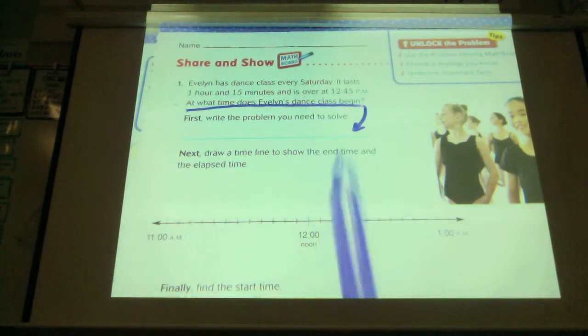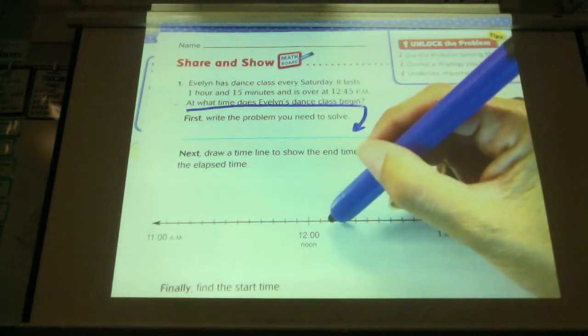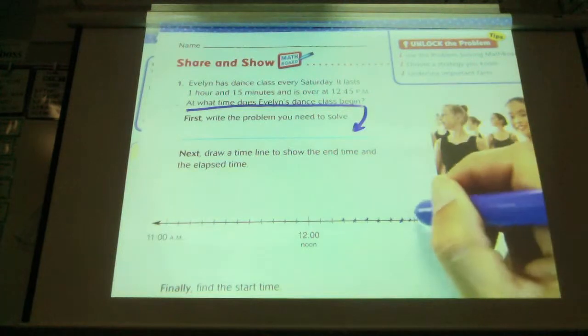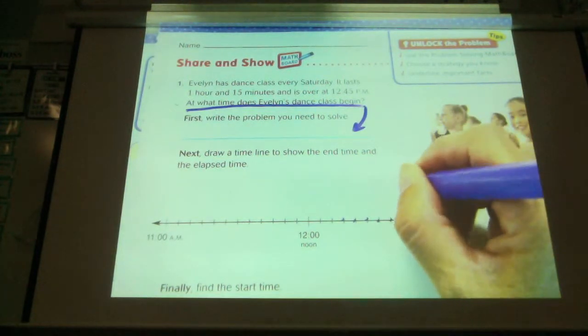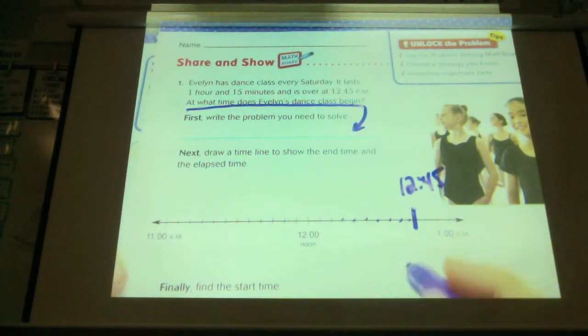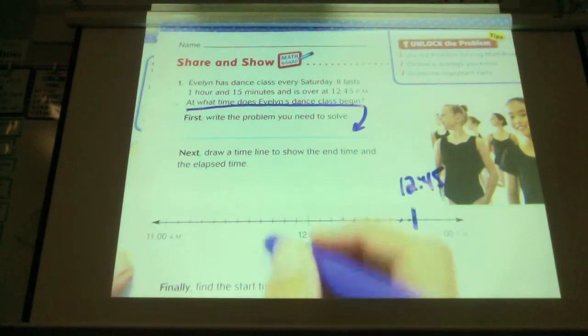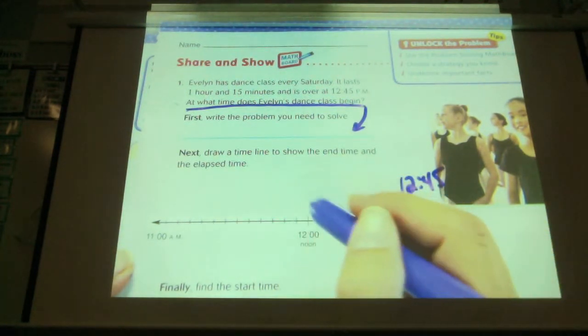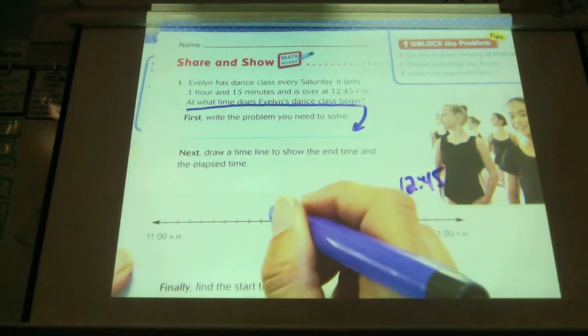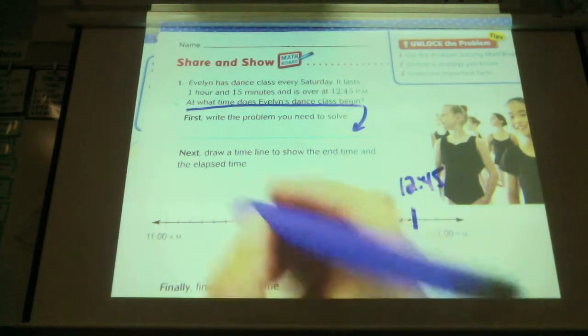So I'm going to find my 12:45: 5, 10, 15, 20, 25, 30, 35, 40, 45. So here's 45 here. And I'm going to go back 1 hour. So if I go back 1 hour, I know 12:45 minus an hour is going to be 11:45.